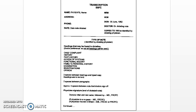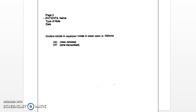Physician signature is end of dictated note. Doctor's initial and last name followed by MD FRCP. If the physician is a surgeon, it's MD FRCSC. If the physician trained in Britain, it's MB FRCSC or FRCPC. Doctor's initials in caps and your initials in lower case. DD is date dictated and DT is date transcribed.